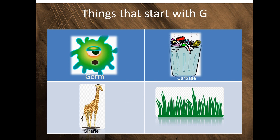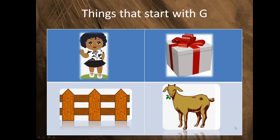This is a giraffe. Do you hear the j sound, like in germ? This is a giraffe — it starts with G and makes a j sound: giraffe. This is grass — grass makes a g sound. Now can you say all of these things with me? Germ, garbage, giraffe, grass.